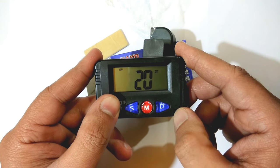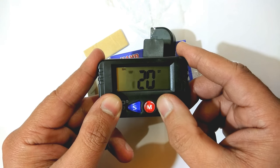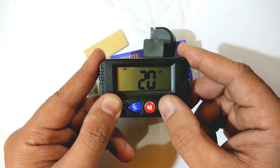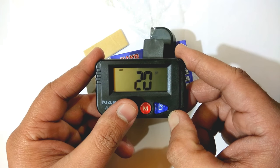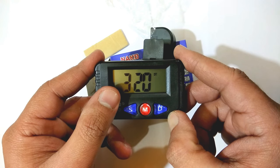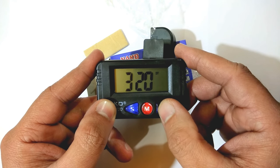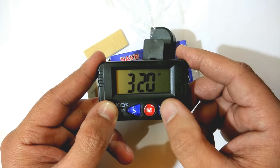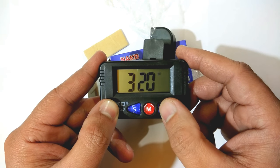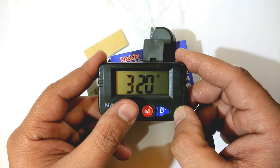When the date is set, press this S button again. Now this is for month. Set the month. After the month is set, press S again. Now this is for day: Sunday, Monday, Tuesday, Wednesday, Thursday, Friday, Saturday. When this is set, press this S button again.